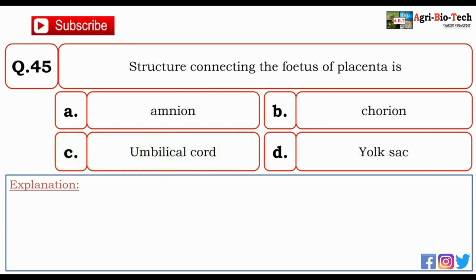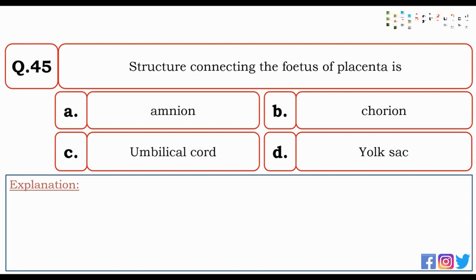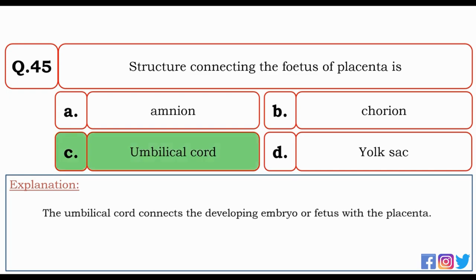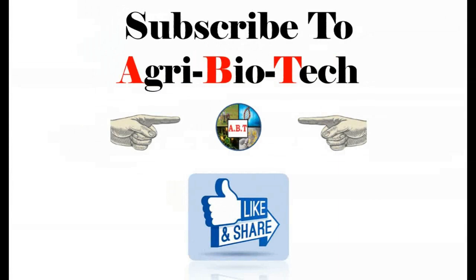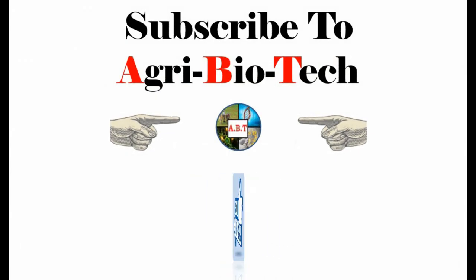The last question of this video: the structure connecting the fetus to the placenta is — amnion, chorion, umbilical cord, or yolk sac? The correct option is C — umbilical cord. The umbilical cord connects the developing embryo or fetus with the placenta. Thanks for watching. Don't forget to like, subscribe, and share our channel AgriBiotic.